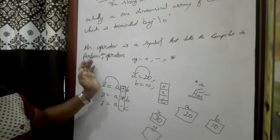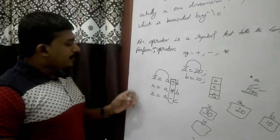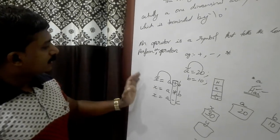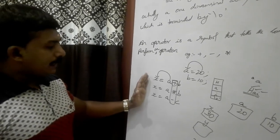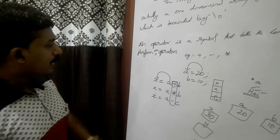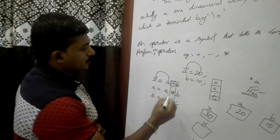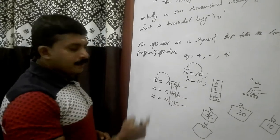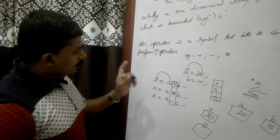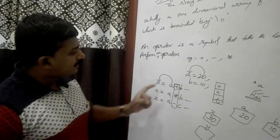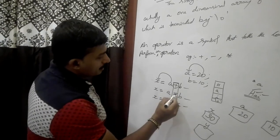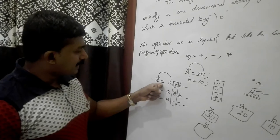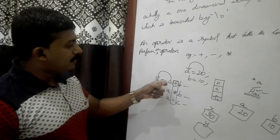An operator is a symbol that tells the compiler to perform an operation. These are three instructions. The assignment operator assigns values — for example, A and B.